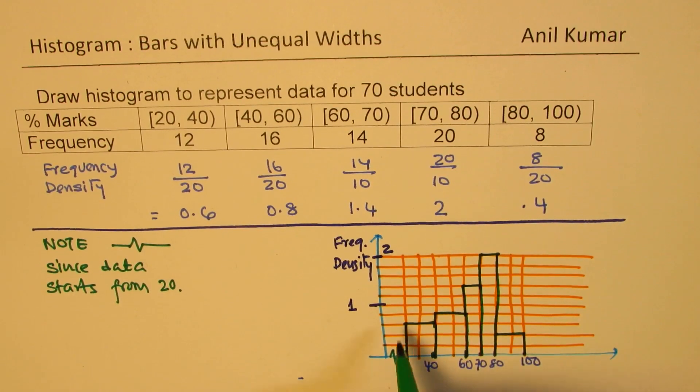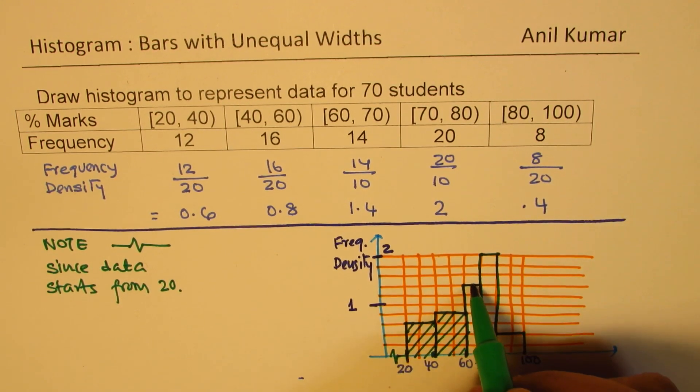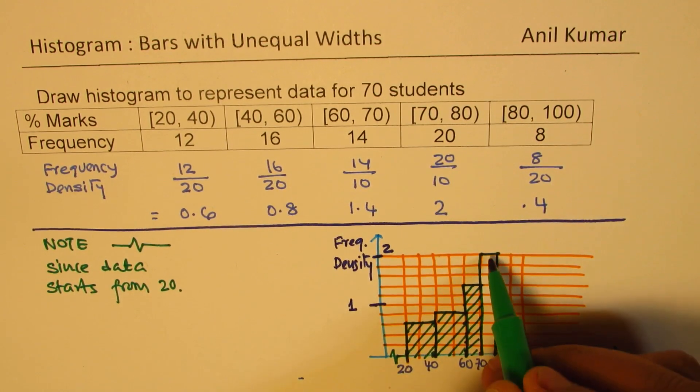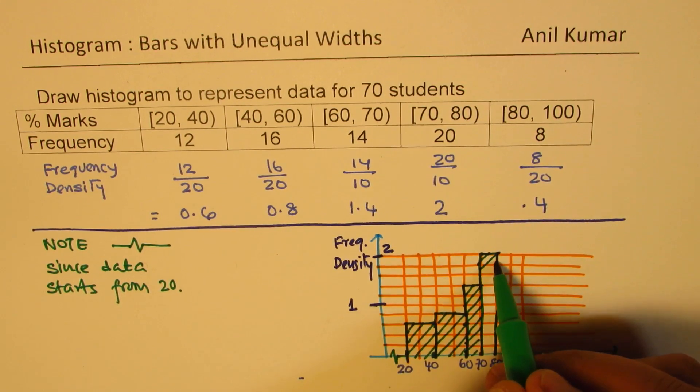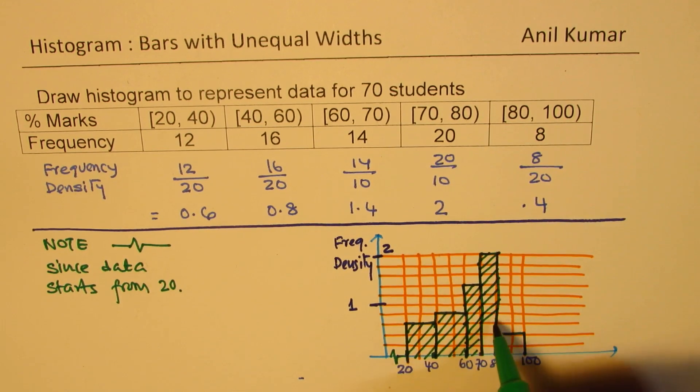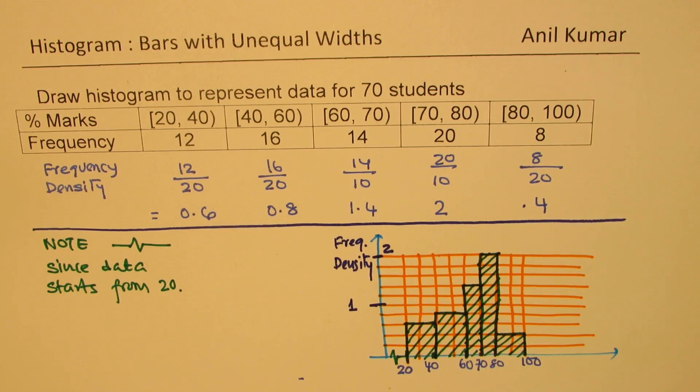That is how we graph the histogram. If you want, you can shade the bars - not really required, but it makes them look prominent and clear. This gives you good practice on how to sketch a histogram, especially when the intervals are not uniform and the data doesn't start with 0.